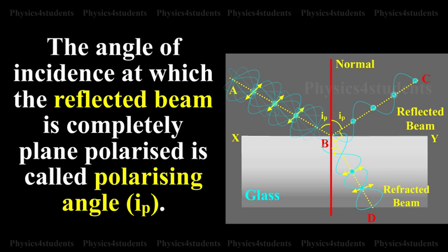The angle of incidence at which the reflected beam is completely plane polarized is called the polarizing angle.